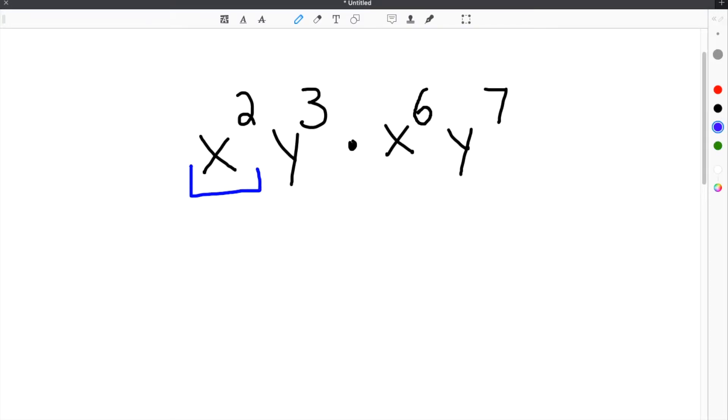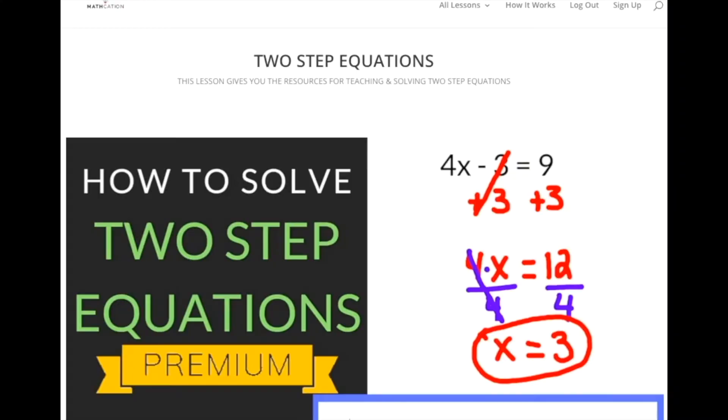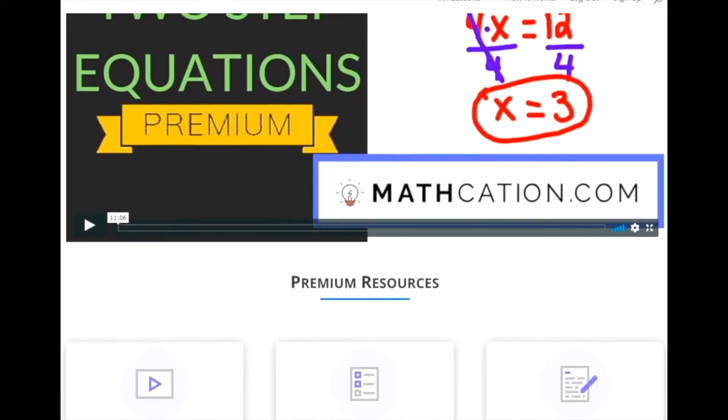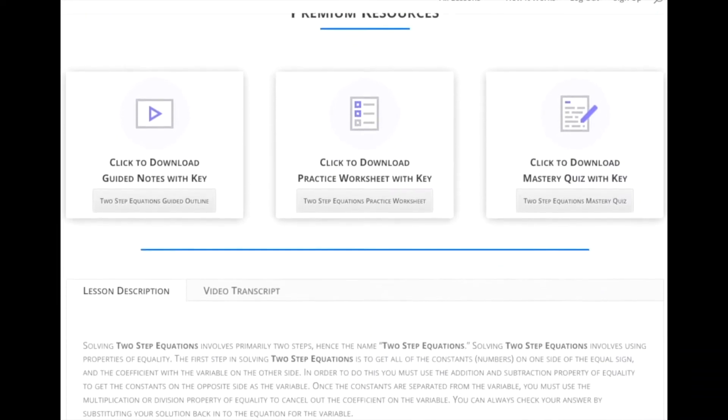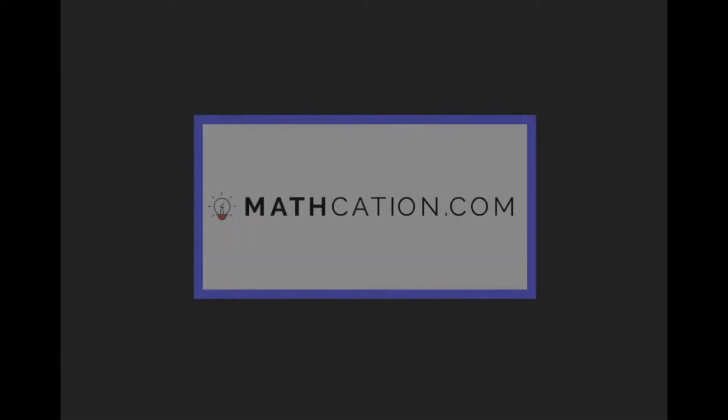The product rule for exponents is a way to multiply expressions containing exponents. When you multiply the expressions, you need to make sure they have the same base. In this video, we're going to show you how to multiply terms like this, including helpful tips and notes to review from.